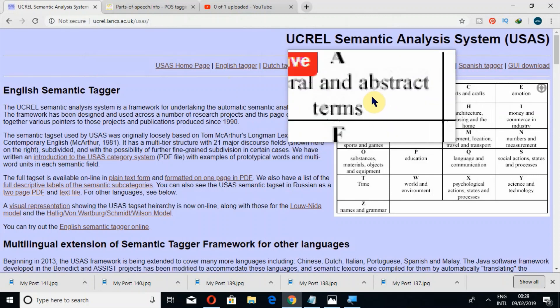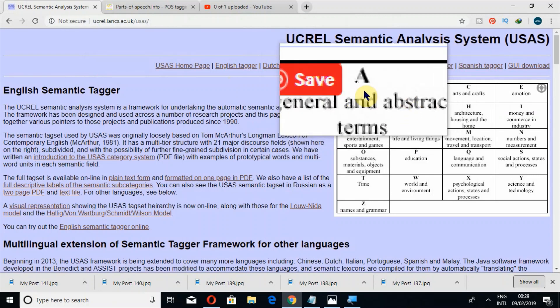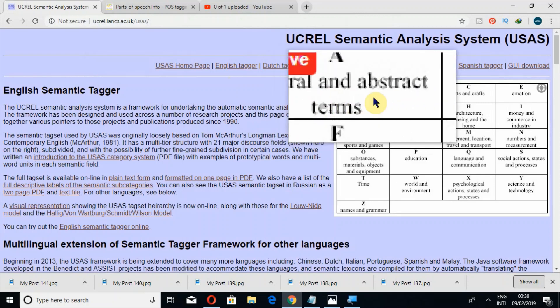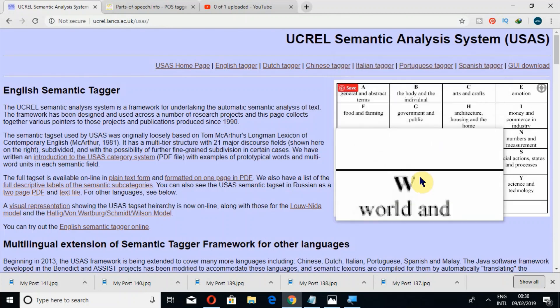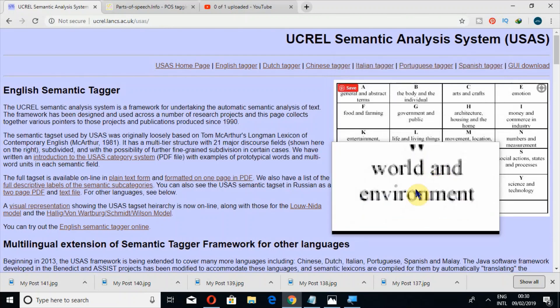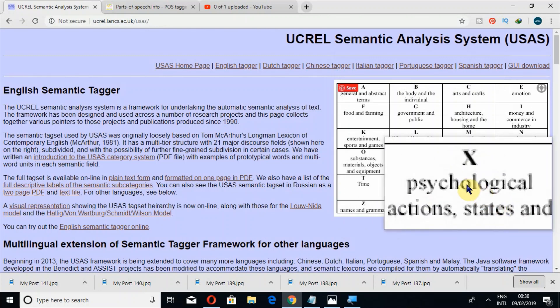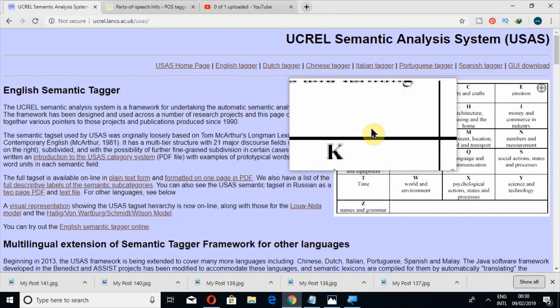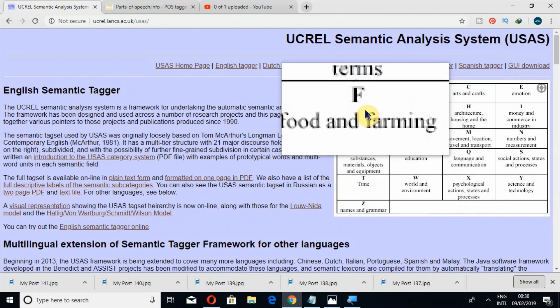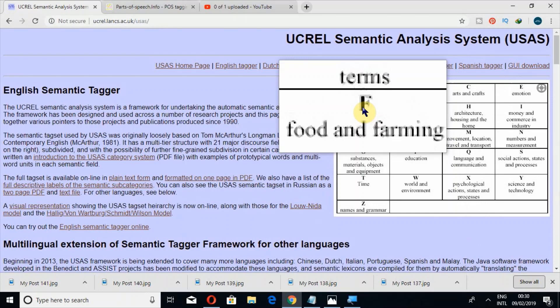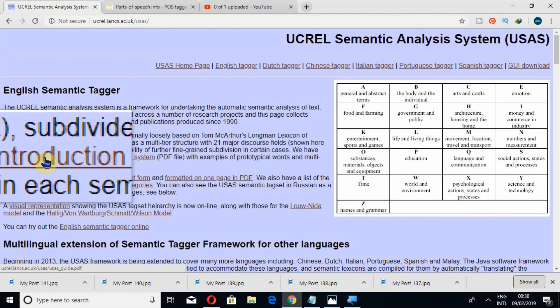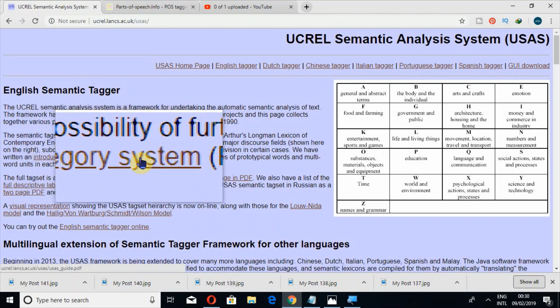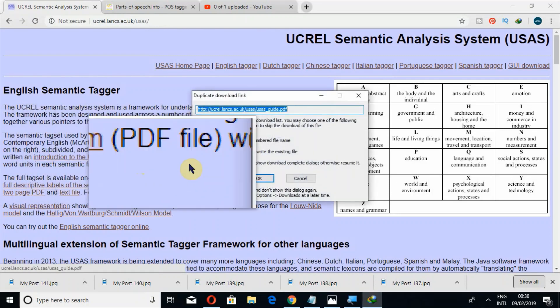Here is the visual representation. For example, A means general and abstract terms, B is the body and the individual, then W is world and environment, then X, and then A to Z. Each of these tags has further categories like A1, A1.1, A1.2, and I'm going to show you this.